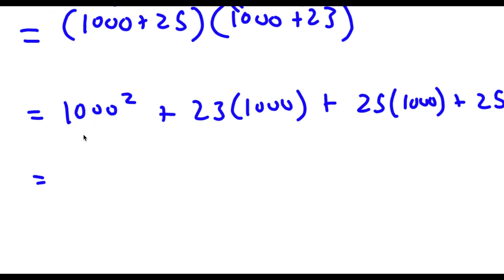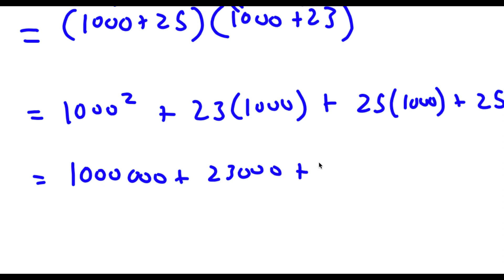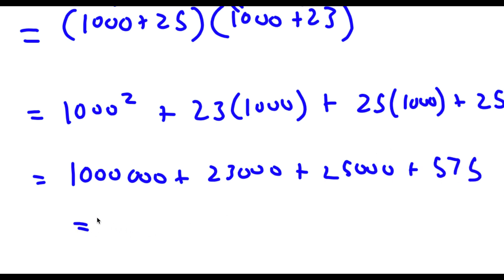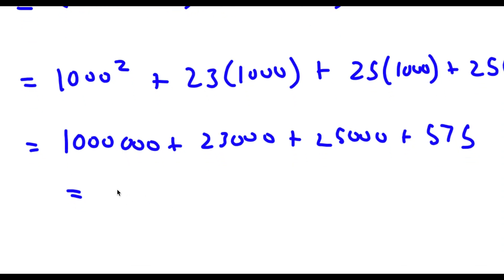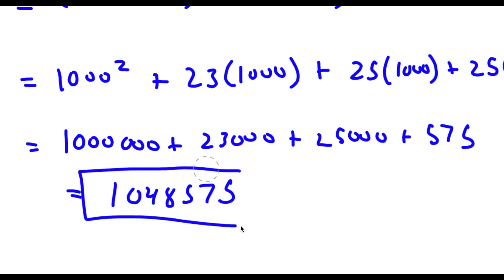So now 1,000 squared is going to equal 1,000,000. Plus 23 times 1,000 is 23,000. 25 times 1,000 is 25,000. And 25 times 23 is 575. So now if you add all of these together you get 1,048,575. So this is my answer.